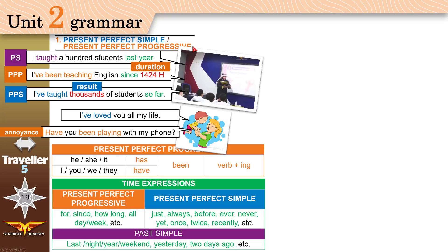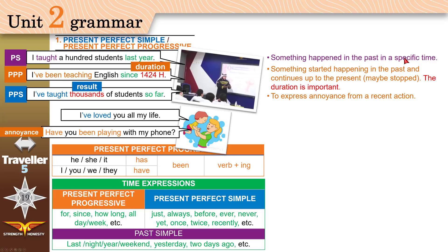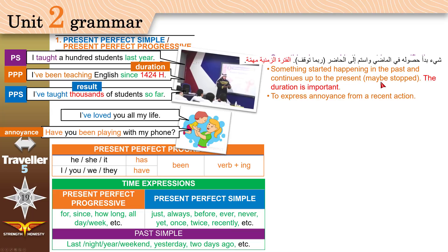To sum things up: Use past simple for things that happened in the past at a specific time. Use Present Perfect Progressive for things that started in the past and continue up to the present — even if they stopped, maybe not long ago. Like someone who has been studying all day — he stopped, but he's been doing it all day long. You can use PPP when duration is important.